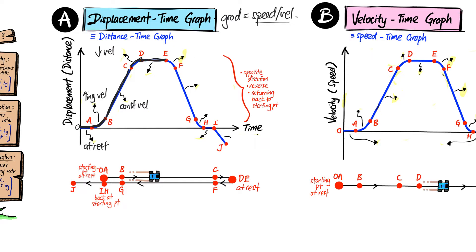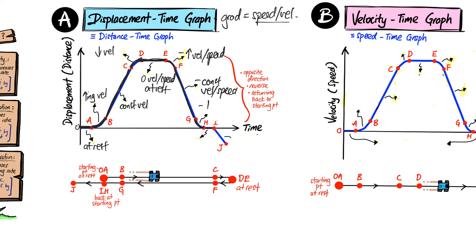From D to E it's flat — zero gradient, zero velocity, zero speed, so the car is at rest again, similar to the first portion. Then from E to F it's getting steeper and steeper, so it's increasing velocity and increasing speed, but in the negative direction — meaning the car is moving back in the opposite direction. From F to G is a constant velocity but negative, so moving in the opposite direction. From G to H the graph is getting less and less steep, so it's negative decreasing velocity.